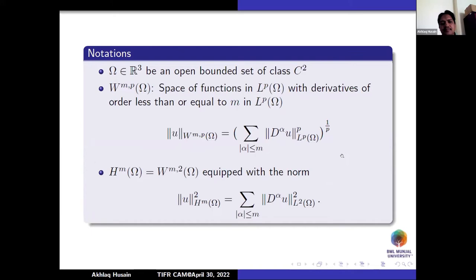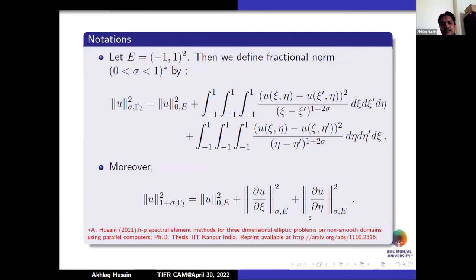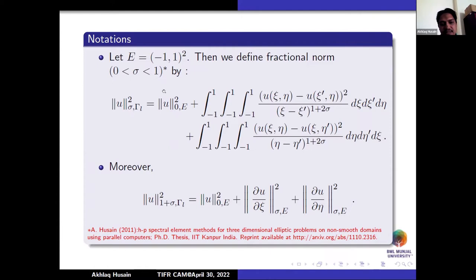We take a domain Ω which is a bounded open subset of class C². W^{m,p}(Ω) denotes the usual Sobolev space of order m, and H^m(Ω) is the Sobolev space when p equals 2, with the usual Sobolev norm — having L^p functions whose derivatives are also in L^p for all derivative orders up to m. We then define a fractional Sobolev norm used on the master element E when it is a square.